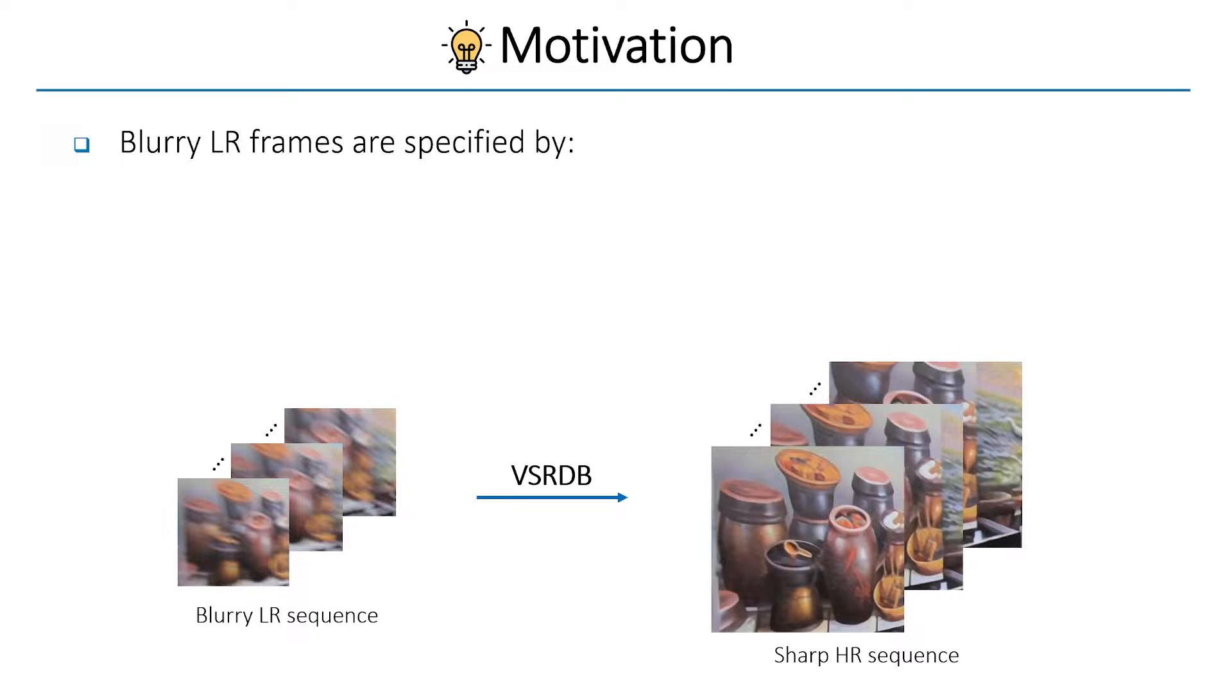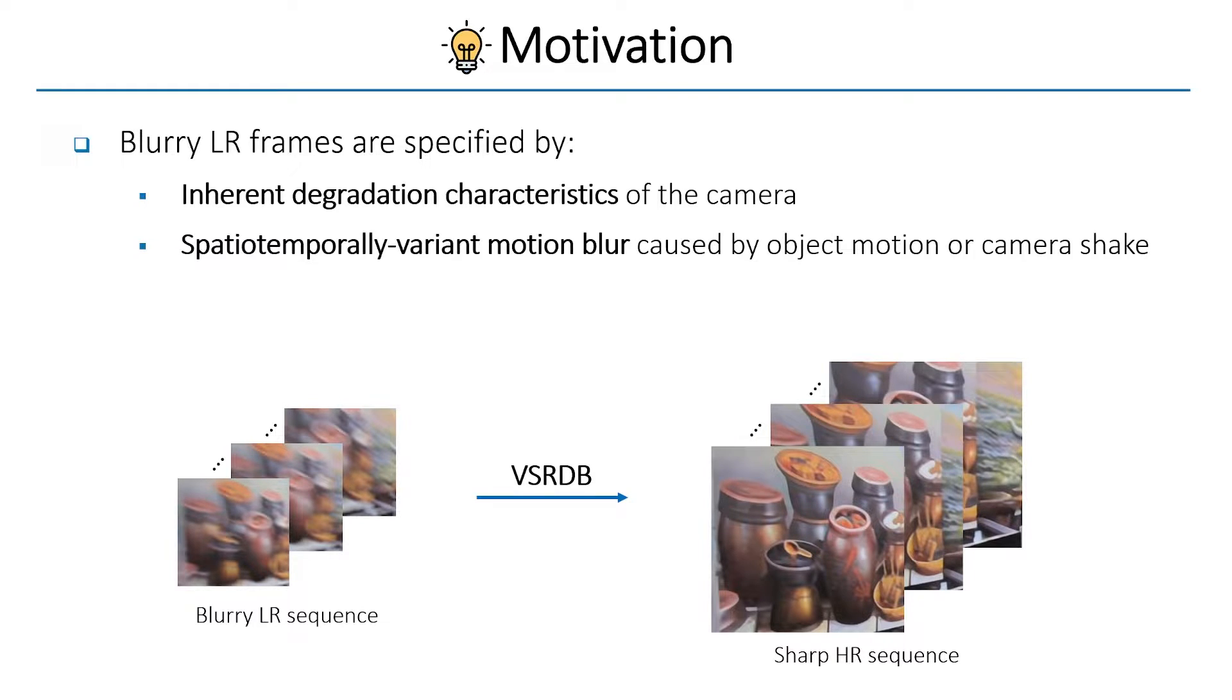Blurry low-resolution frames contain various types of degradations, such as blur caused by inherent degradation characteristics of the camera and spatio-temporally variant motion blur due to object motion or camera shake. Therefore, VSRDB methods should appropriately handle spatio-temporally variant characteristics.